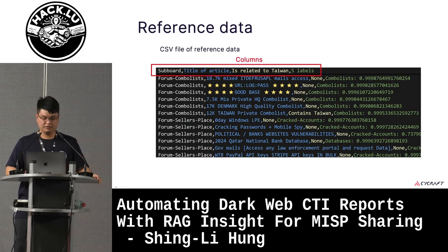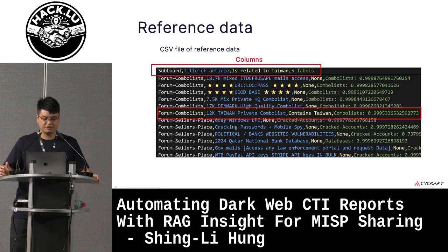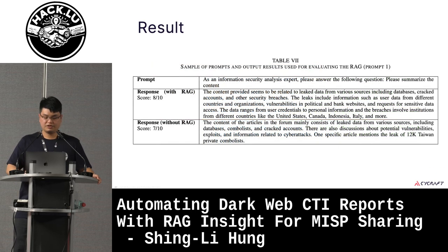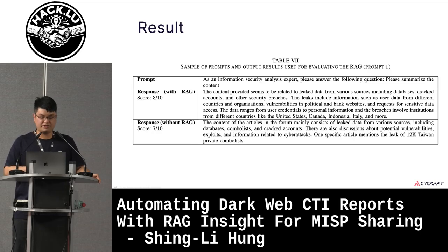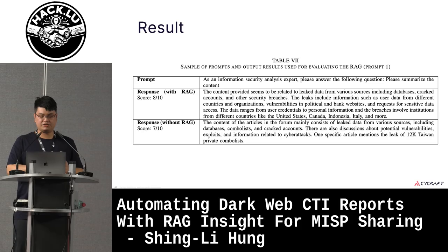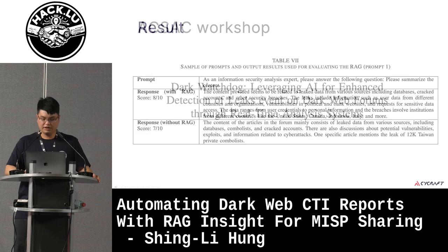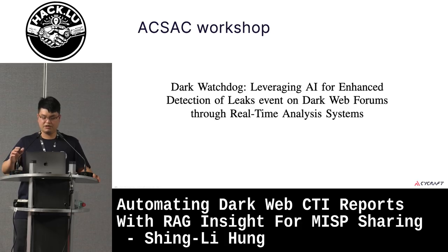An example row shows data from a foreign combo list with title '12K Taiwan private combo list,' containing 'Taiwan,' and our model classified it as combo list. We compare responses with RAG and without RAG, using LLM to evaluate based on authenticity — which response is closer to the reference data. The RAG version performs better on average. We will publish our paper at the ACSAC workshop in December, where you can see the full evaluation details.